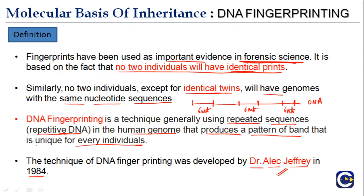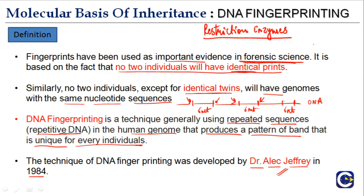What do we mean by a 'pattern of bands'? The DNA is chopped using restriction enzymes — enzymes that recognize specific sites on the DNA and cut it. A specific restriction enzyme will cut the nucleotides at those sites, and when you run the resulting fragments on an agarose gel, you see different bands. We'll see this in more detail when we cover the process.